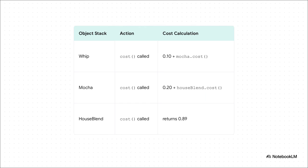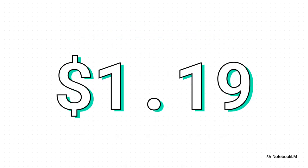So how does the cost get calculated? This is the really clever part. When we ask the outermost wrapper — the whip object — for the total cost, it doesn't know the full answer. It says: my cost is 10 cents, plus whatever the thing I'm wrapping costs. Then it passes the request down. That request keeps delegating all the way down the stack until it hits the base houseblend. Then the final answer gets built as each wrapper adds its own cost on the way back up the chain. It's a beautiful little chain reaction. We get our final correct price of $1.19, and we did it all without ever creating some rigid one-off houseblend-with-mocha-and-whip class. We just combined behaviors on the fly. That is the power of this pattern.